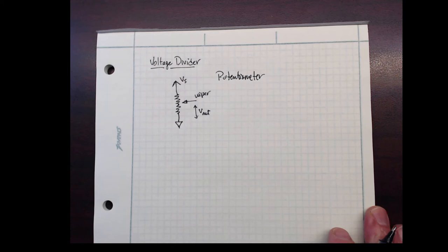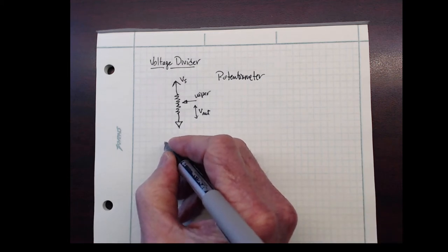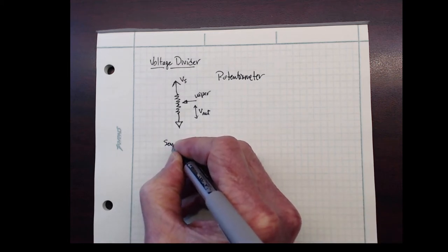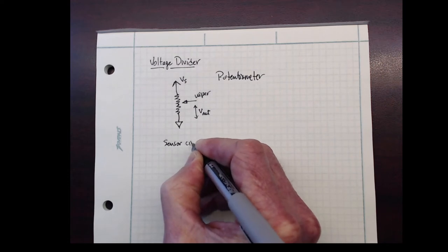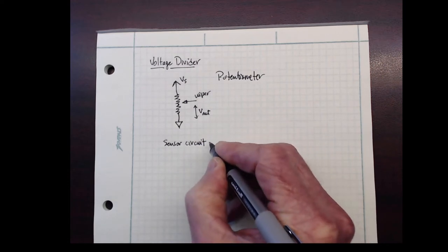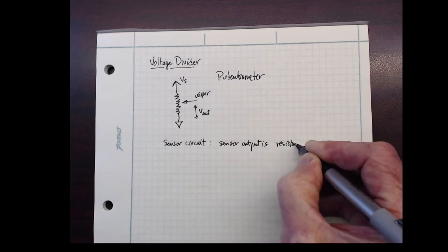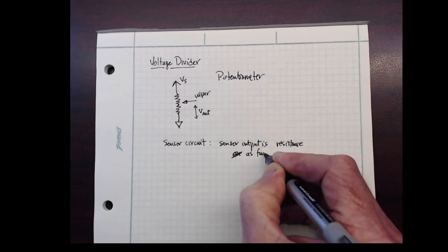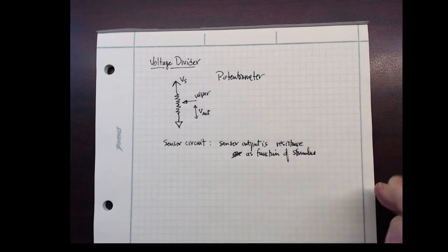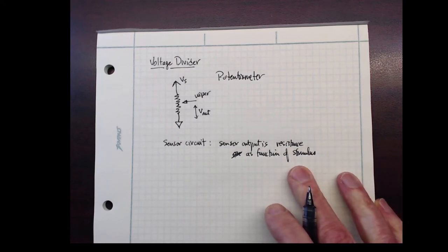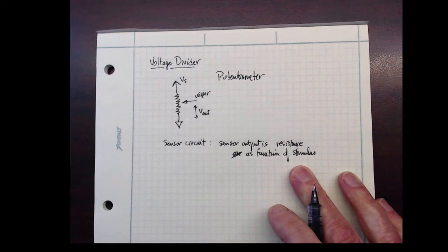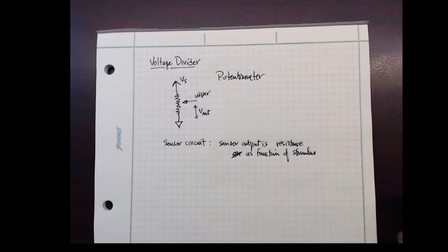The application here is in a sensor circuit where the sensor itself has variable resistance. This could be a thermistor, which has a resistance that changes with temperature. It could be a photoresistor, a sensor that changes its resistance as you expose it to more or less light, or a variety of other types of sensors.